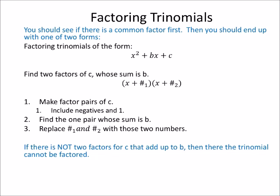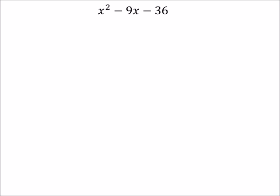If we can't find two numbers that are factors of c whose sum is b, then the trinomial cannot be factored, and that's okay. On this problem, we got b is -9 and c is -36. We're looking for two factors of c which is -36, which when we add them up need to equal -9.